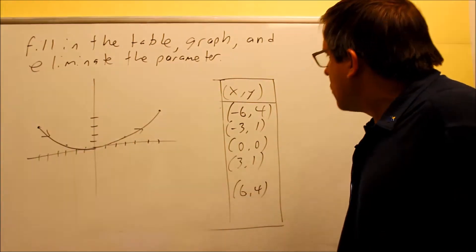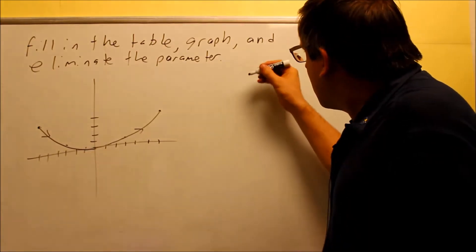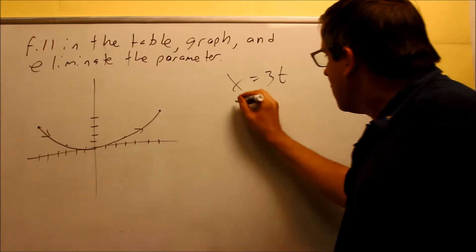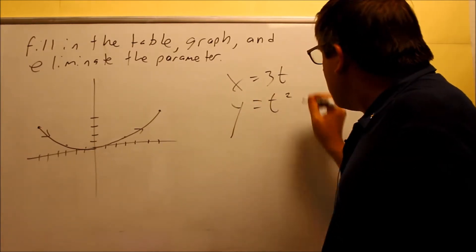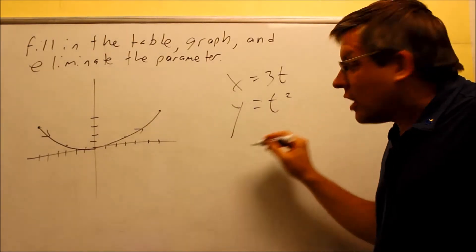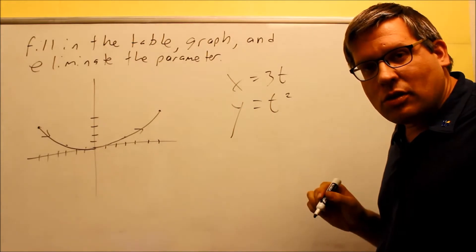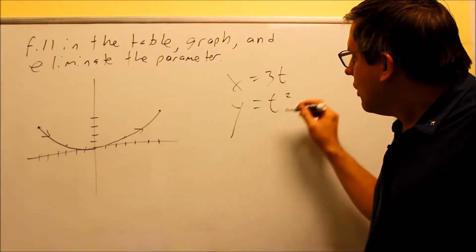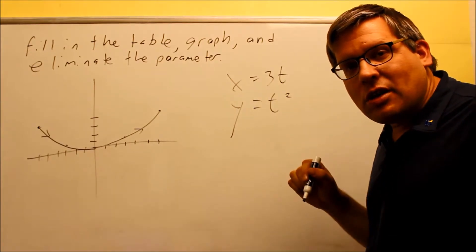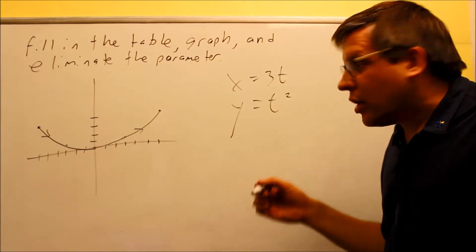So now we want to eliminate the parameter. Here are the two equations we had previously. We have x is equal to 3t, and we have y is equal to t squared. Now what we want to do is usually you're trying to solve for y, but you might have to also solve for x. Depends on the type of problem. But in this case, what we want to do is take one of the equations, you're going to solve for t, substitute it into the other one, and that will allow us to eliminate the parameter.